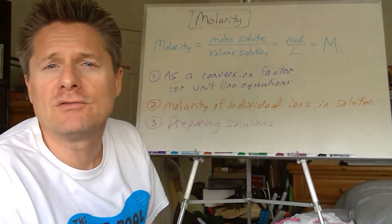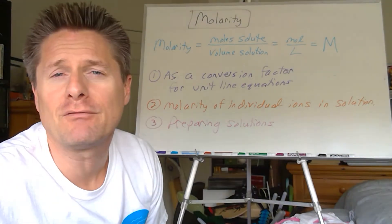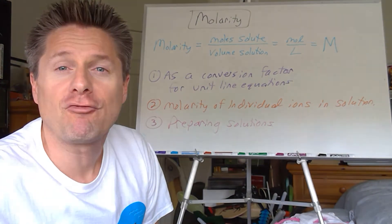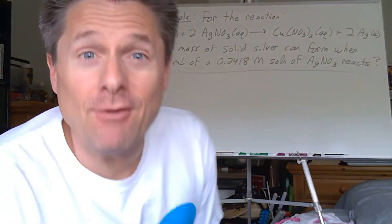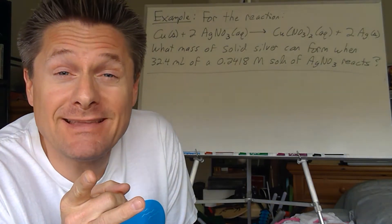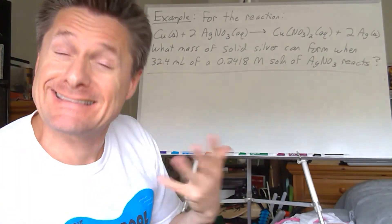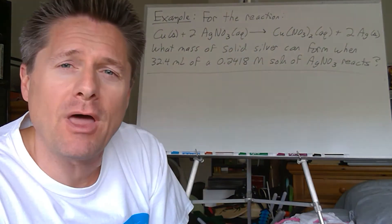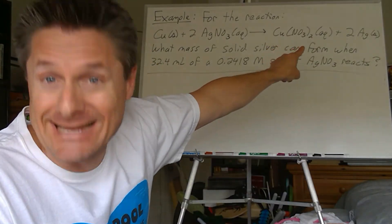Let's start with using molarity as a conversion factor. We'll use the reaction from the last video: solid copper plus silver nitrate solution forming copper(II) nitrate solution and solid silver. What mass of solid silver can form when 32.4 milliliters of a 0.2418 molar solution of silver nitrate reacts? Since no information is given on the copper solid, we assume copper is in excess and silver nitrate is the limiting reactant.